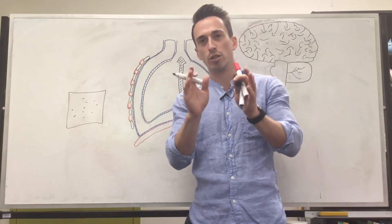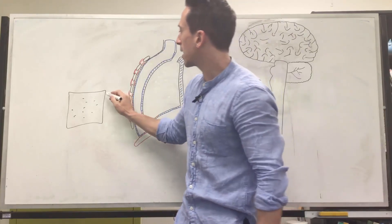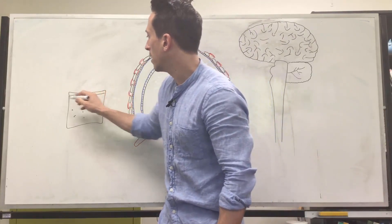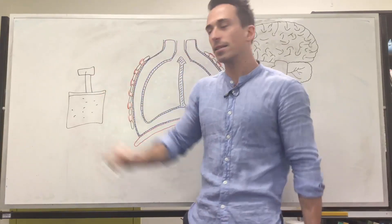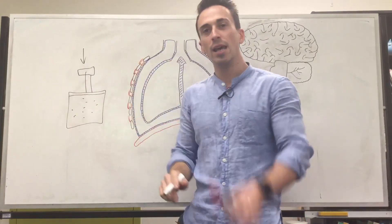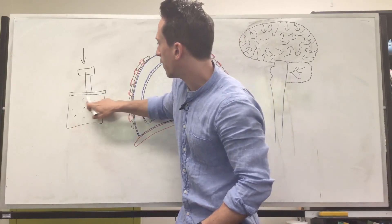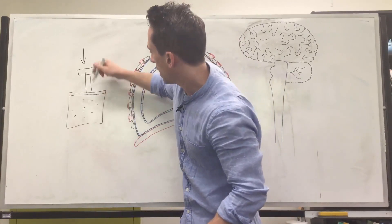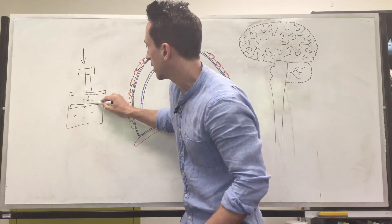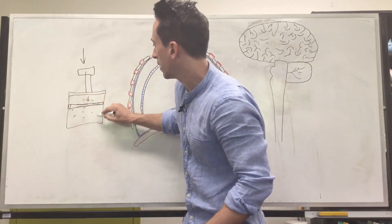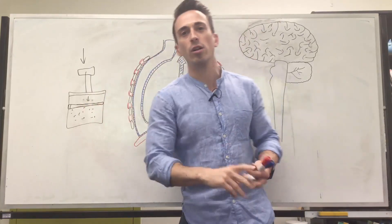But there's another way that we can change the pressure and that is if we were to say that the lid of this container now becomes a piston. And let's now say that we push down on that piston and we decrease the volume in here. So now this piston moves down and now we've decreased the volume. We have the same amount of particles but we've decreased the volume.